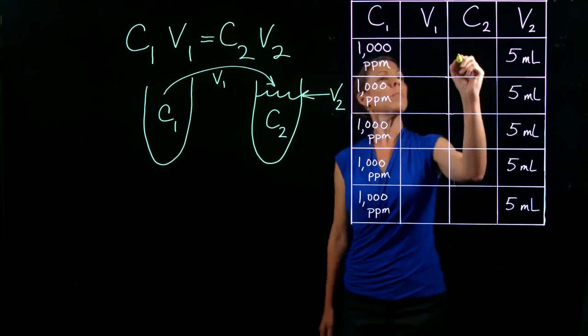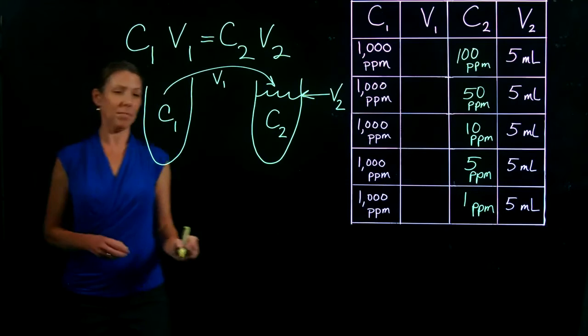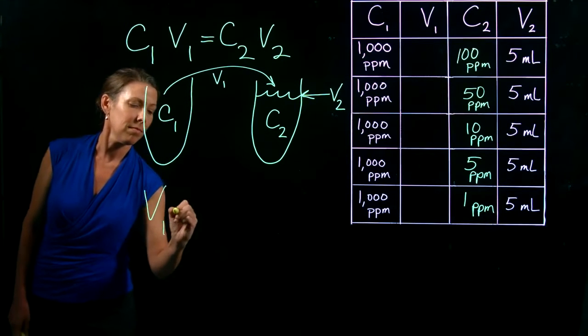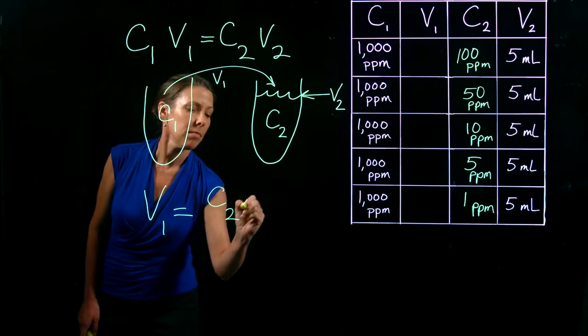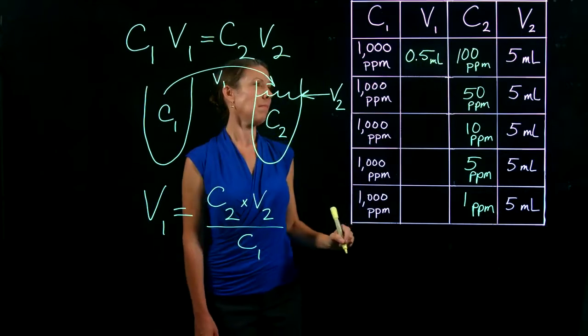We are making five calibration standards ranging from 100 ppm to 1 ppm. We solve for V1. To calculate V1 for the 100 ppm standard, we multiply 100 by 5 and divide by 1000. V1 equals 0.5 mils.